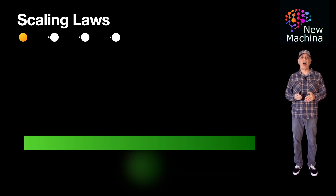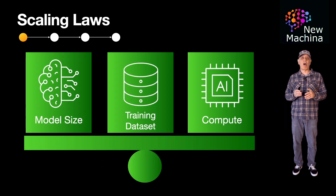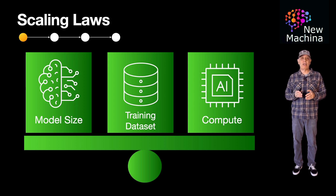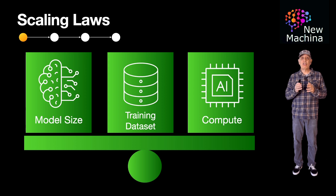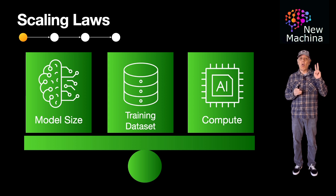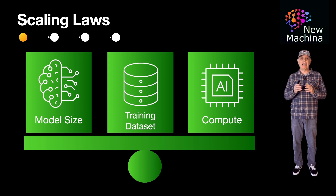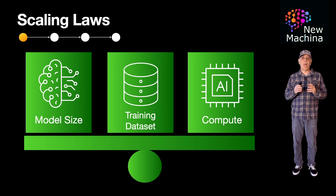With scaling laws, it turns out there's an optimal balance between the number of model parameters, the amount of training data, and the compute used for training to maximize performance. Overscaling one aspect without balancing the others leads to diminishing returns. Essentially, if you scale one or two of these areas and not the third, you are likely not to see significant LLM performance improvements. This balance of model size, training data, and compute is highlighted by the Chinchilla paper.